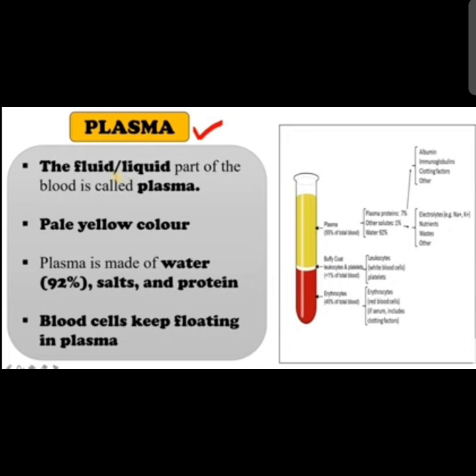Plasma is the liquid or fluid part of the blood. It is pale yellow or yellowish in color and contains about 90 to 92 percent water, as well as salts and proteins. Plasma carries water and various materials like digested food, waste materials, and hormones from one part of the body to another. Blood cells keep floating in plasma since it is the liquid component.